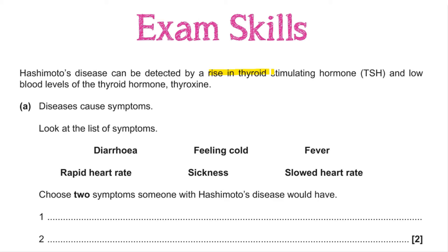In this case we can see we get a rise in thyroid stimulating hormone and low levels of thyroxine. Think about what we know about thyroxine: it controls the energy available to cells, so when we increase thyroxine in the blood the metabolic rate also increases, meaning cells can transfer more energy to carry out functions. So if we've got lower thyroxine — as the question tells us — we're going to have a much lower metabolic rate. With less energy available to cells we won't be generating much heat, so we'll feel colder, and heart rate will be slowed because heart rate needs energy. You can just work this out by recalling your knowledge on thyroxine.